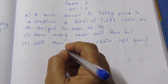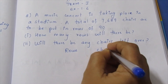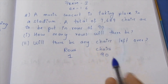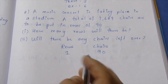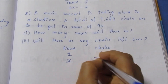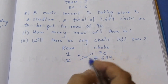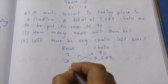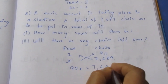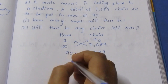Unitary method: Rows and Chairs. One row has 90 chairs. Total chairs are 7,689. Now cross multiply: 90 into x equals 7,689. So x is equal to 7,689 divided by 90.